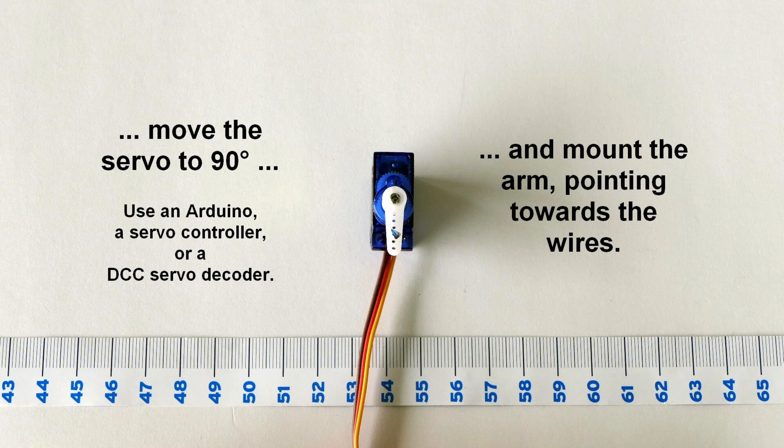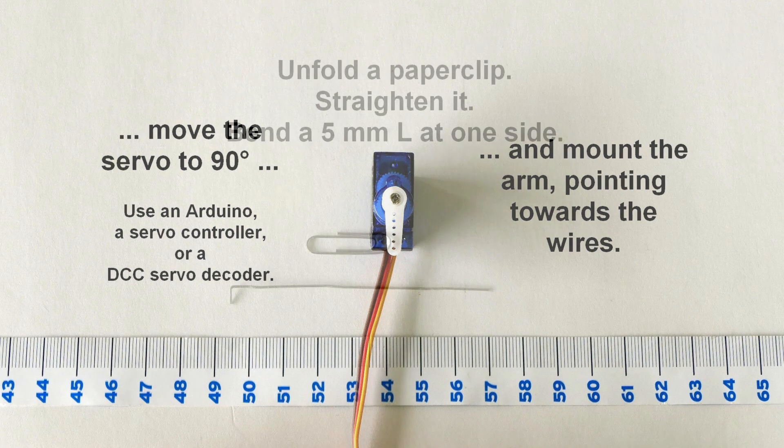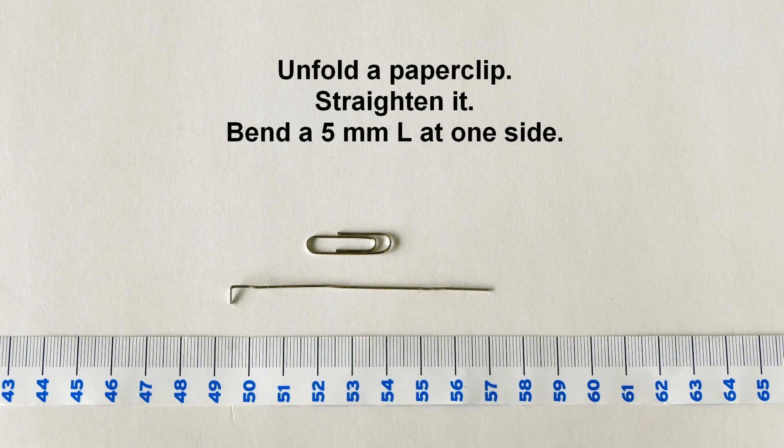And the arm should point towards the wires because the other side, that's where we have cut off that wing. To switch the turnout we need a pin.